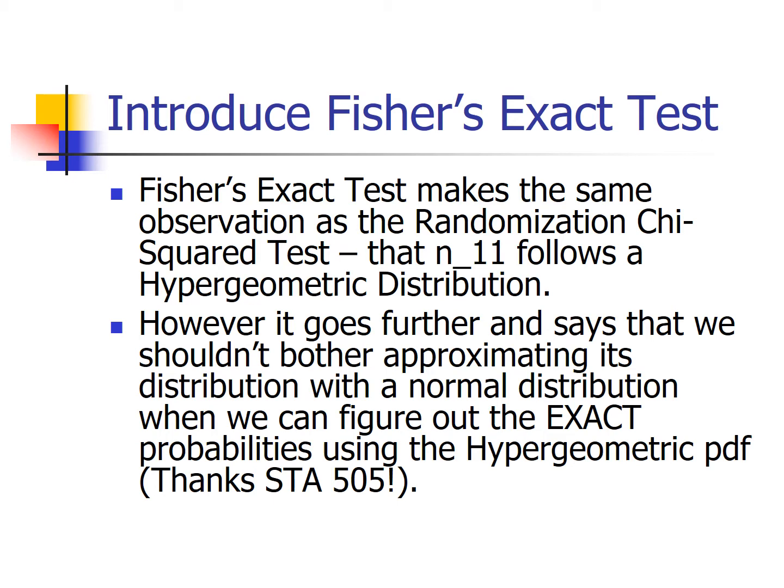Let's see how we do that, because it is a little unusual. Up until now, any time we've calculated a p-value, it's been using a continuous distribution — the normal distribution, the t distribution, the F distribution, the chi-square distribution. Hypergeometric is discrete. We've never calculated a p-value using a discrete distribution. Let's see how that works.